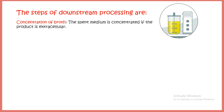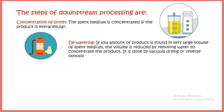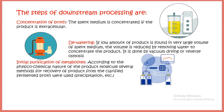The broth containing the protein of interest must be concentrated, since the culture volume can be thousands of liters. A dewatering step removes excess water using vacuum drying. Initial purification uses HPLC-based columns or high-throughput column chromatographic methods. Depending on the nature of the product, you can use hydrophobic interaction columns, ion exchange columns, or other HPLC setups — all at industrial scale, very different from day-to-day lab HPLC.